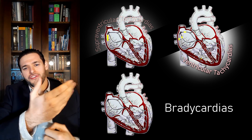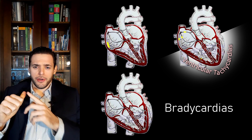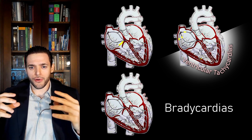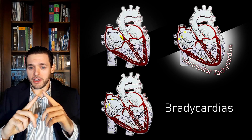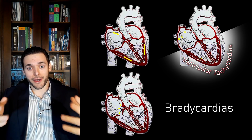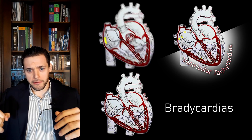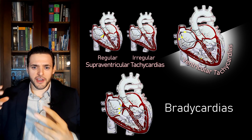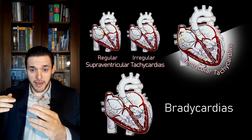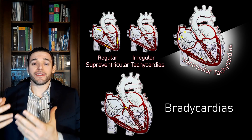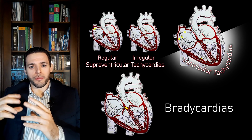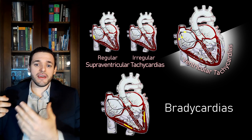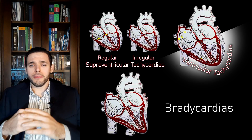If we have a supraventricular tachycardia, we already know the heart rhythm is increased and that this focus of increased electrical depolarization is above the ventricles. The next question then is: is it regular or is it irregular? Is this focus of electrical impulse promoting depolarization at regular intervals of time, or is it firing somewhat at random? If it's producing depolarization at regular intervals, it's a regular rhythm; otherwise it's an irregular rhythm. This is useful because there are different causes for each.